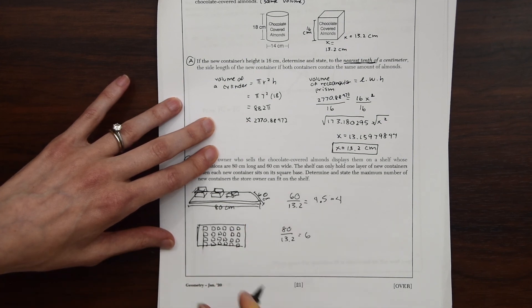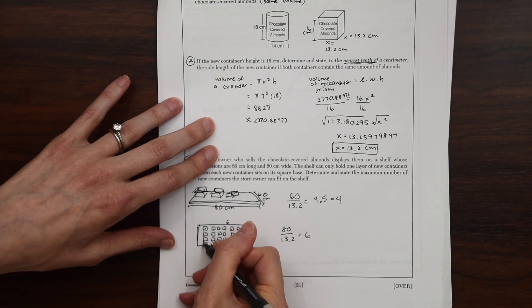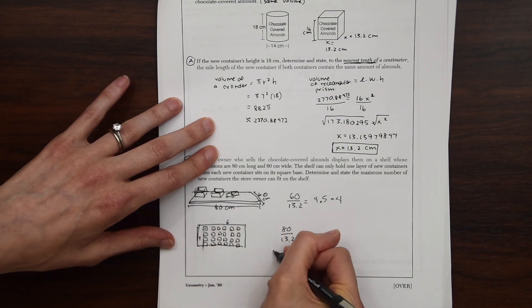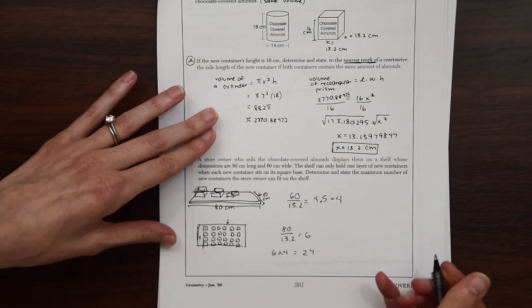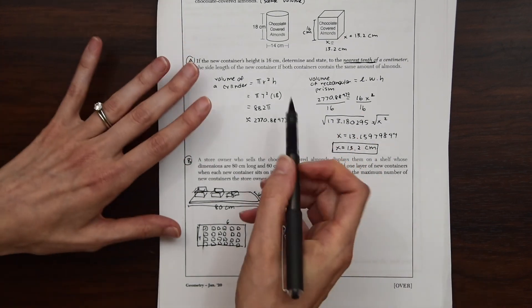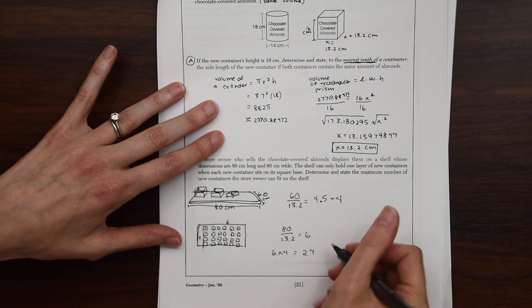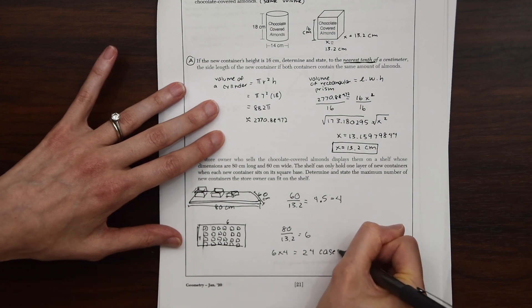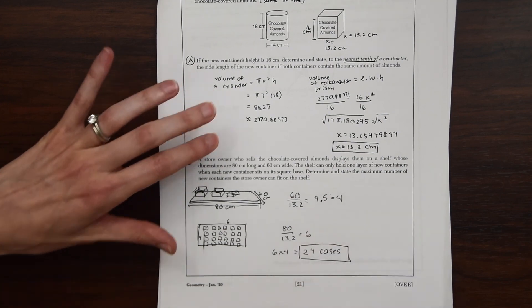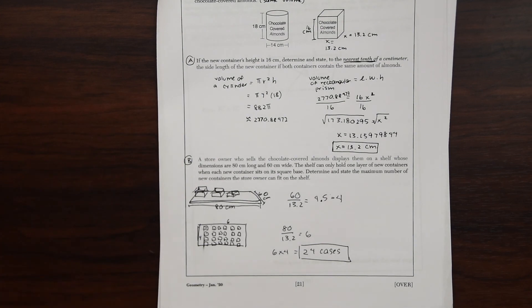So now, how many are on the shelf here? So we have 1, 2, 3, 4, 5, 6 times 1, 2, 3, 4. So if you do 6 times 4, we're going to have 24. That's possible chocolate-covered almond cases. So 24 cases. And that's our answer for 34.